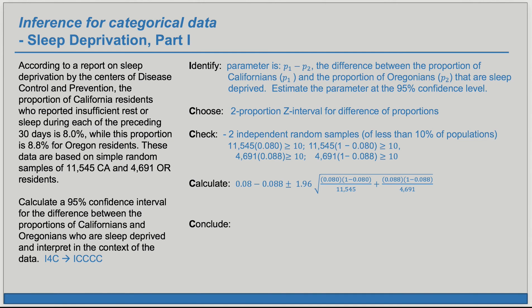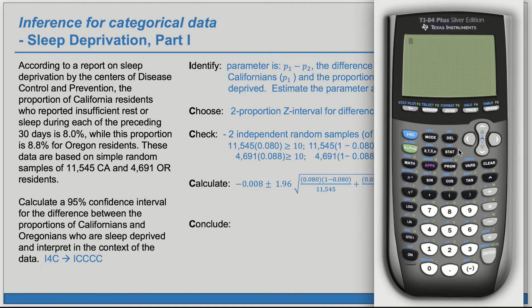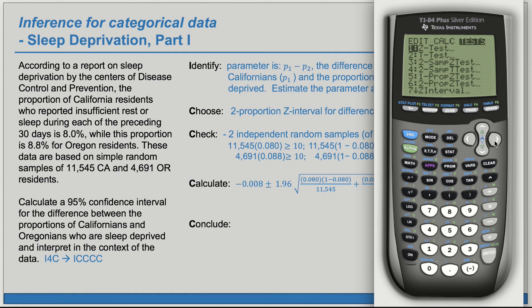Now we have our confidence interval. Our point estimate for the difference is minus 0.008, and then we have plus or minus the margin of error term. I'm going to use a shortcut on the TI calculator. I'll go to STAT, over to TESTS, and since this is two proportions, we're going to do 2PropZInt. Here it is — 2PropZInt.